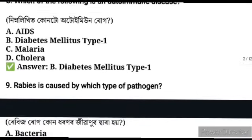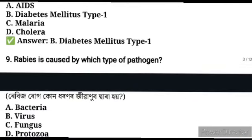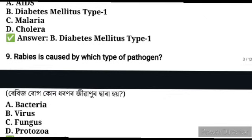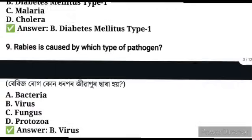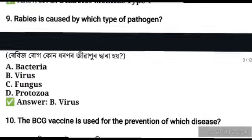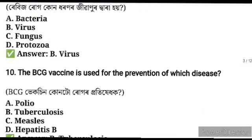Question number nine: diabetes is caused by which type of pathogen? COVID is caused by a virus. HIV virus — the disease is caused by which type of pathogen? The virus is related to a vaccine.